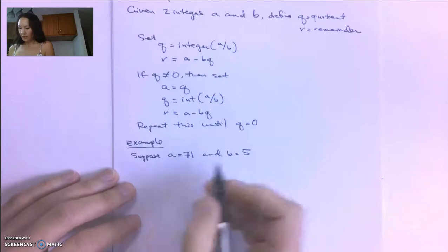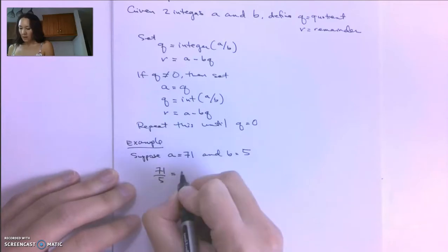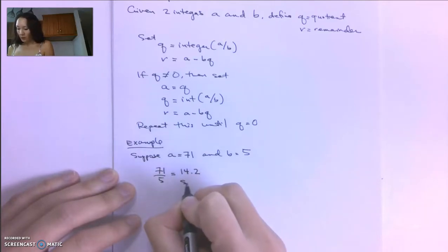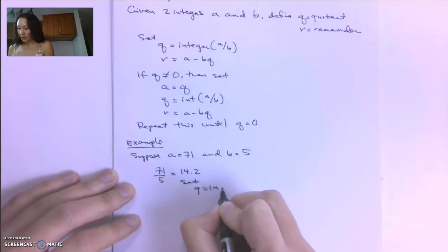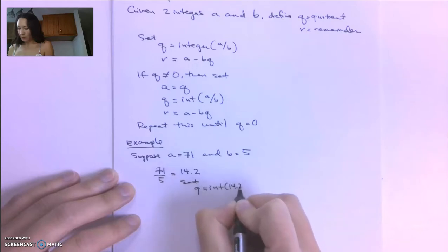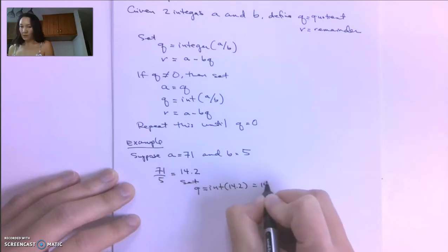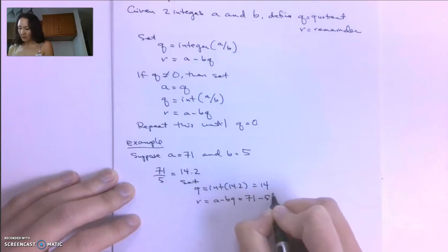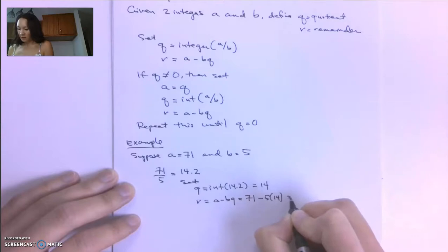The first thing we do is we take A divided by B. So 71 divided by 5. The result of this is 14.2. So we're going to set Q equal to the integer part of 14.2, which is just 14. And then we set R equal to A minus BQ, which is 71 minus 5 times 14, which is 71 minus 70.